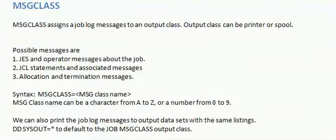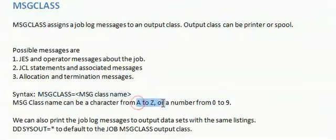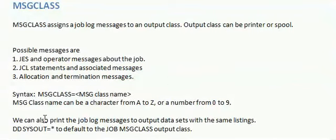The syntax is MSGCLASS equal to message class name. The value can be A to Z or 0 to 9. We can also print the job log message to the output datasets with the same listing, using DD SYSOUT equal to star to default to the job message output class.